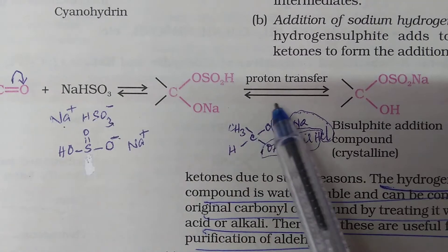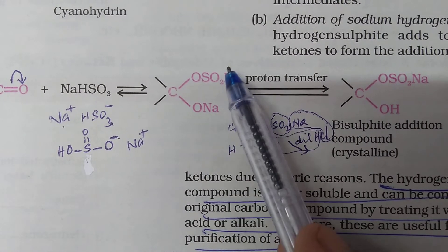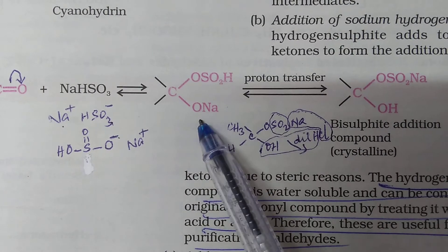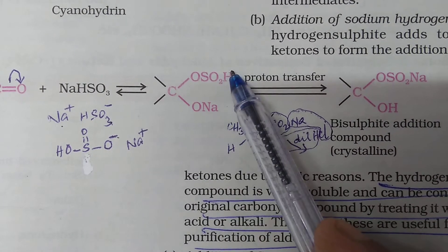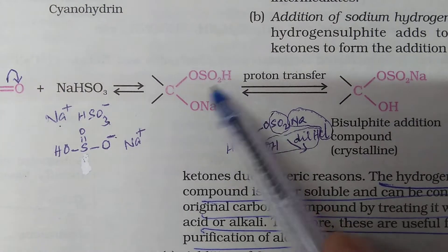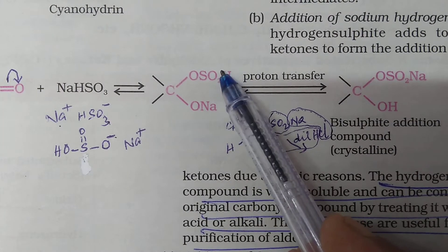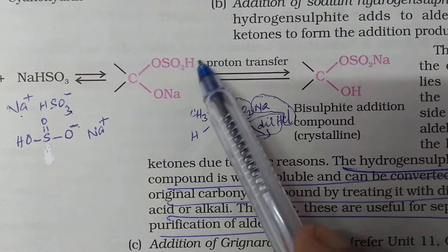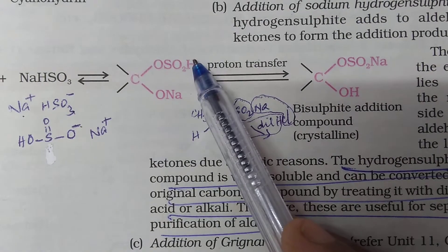Here what happens? In the next step, there is a proton transfer. That is, hydrogen from here will shift to this position and Na will go there because SO3H ka jo sodium salt form hain, boh zayadha stable hain. Is liye ye proton transfer yehaan pe hota hain. Toh proton yehaan pe aagaya, Na wahaan pe chala gain.